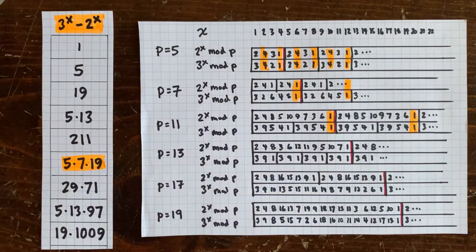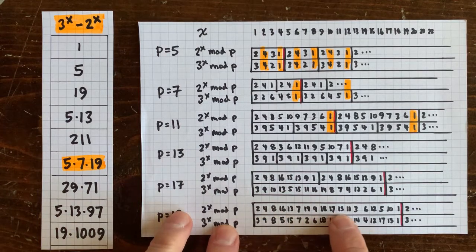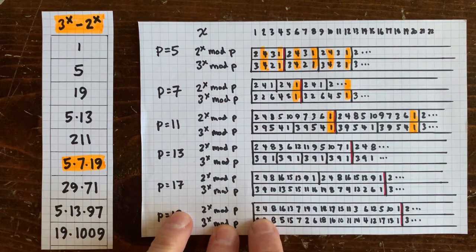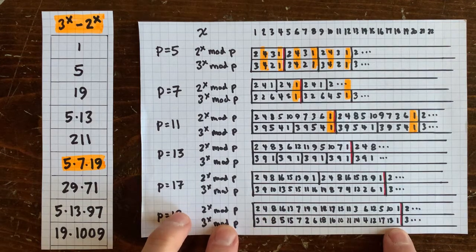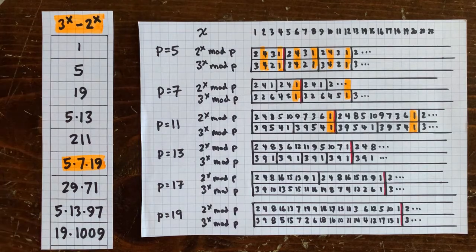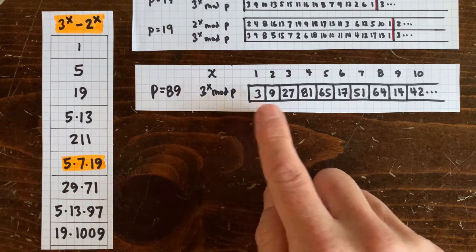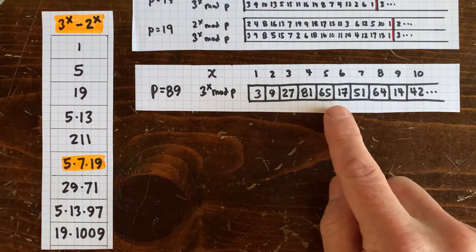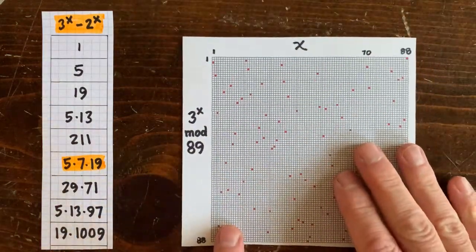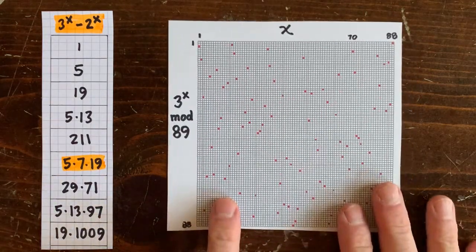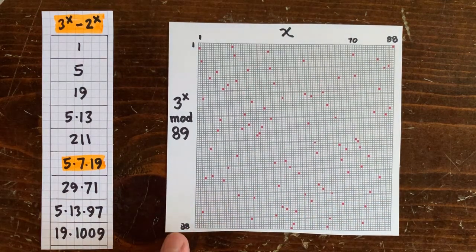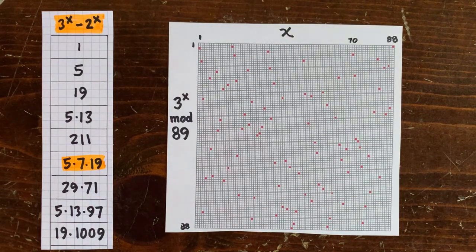When it does make it all the way, you get a super random-looking sequence of numbers between 1 and p minus 1. It starts with 2 or 3 and ends with 1, but in the middle it's crazy. Looking at a bigger prime, p equals 89: as x increases we get 3, 9, 27, 81 — so far so good — but then it starts getting weird. Here's a plot with x across the top and 3 to the x mod 89 down the left. People actually use 3 to the x mod p as a pseudo-random number generator — honest to God, that's how weird this looks.